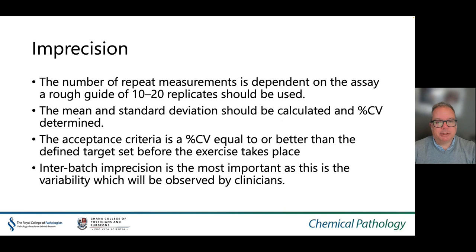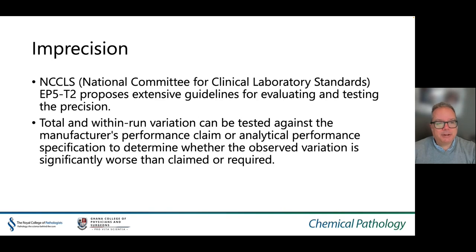The number of repeat measurements depends on the assay; as a rough guide, at least 10 to 20 replicates should be used. The mean and standard deviation should be calculated, the percent CV determined, and the acceptance criterion is that the CV is equal to or better than the defined target set before the exercise. Interbatch imprecision is the most important as this is the variability observed by clinicians. The NCCLS proposes extensive guidelines for evaluating and testing precision, enabling determination of total and within-run variation.